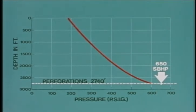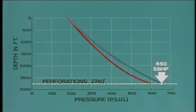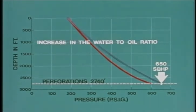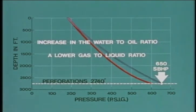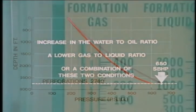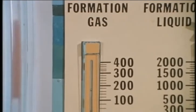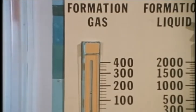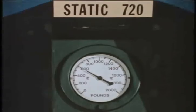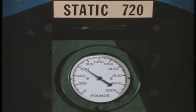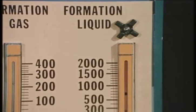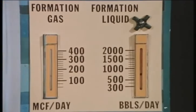This pressure decline can continue until it causes the well to die. In the second case, an increase in the vertical pressure gradient, as shown by the blue curve, could be caused by an increase in the water-to-oil ratio, a lower gas-to-liquid ratio, or a combination of these two conditions. For example, when we reduce the formation gas from 200 to 150 MCF per day, flowing bottom hole pressure increases from 600 to 640 PSI and liquid production decreases from 850 to 700 barrels per day.